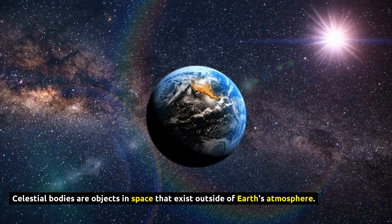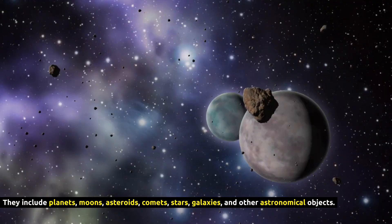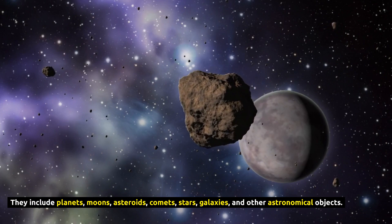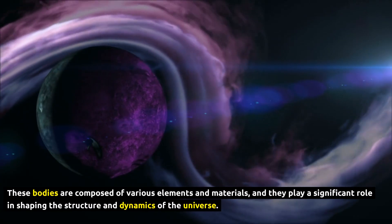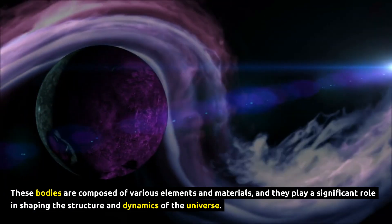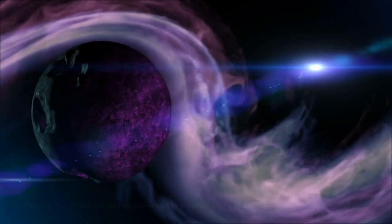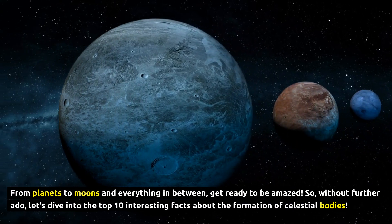Celestial bodies are objects in space that exist outside of Earth's atmosphere. They include planets, moons, asteroids, comets, stars, galaxies, and other astronomical objects. These bodies are composed of various elements and materials, and they play a significant role in shaping the structure and dynamics of the universe. From planets to moons and everything in between, get ready to be amazed.